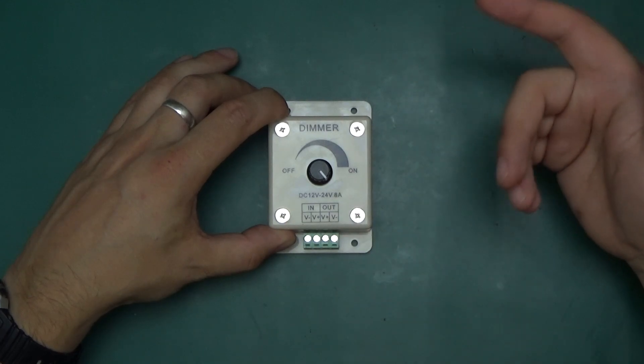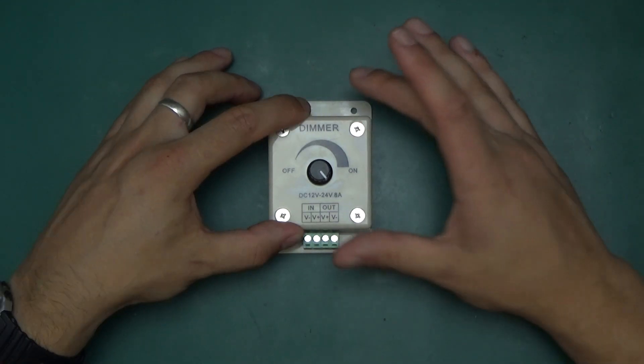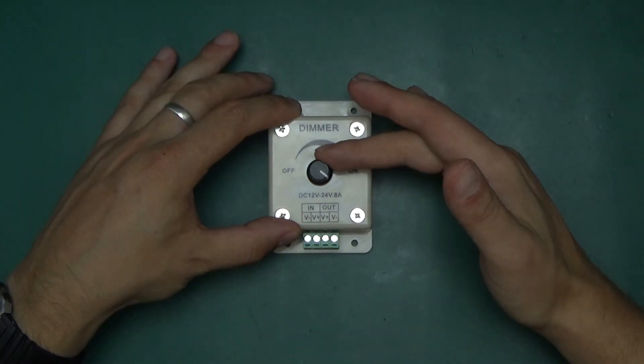It's a 12 to 24 volt input. There's a 0.8 amp. Is it 8 amp or 0.8 amp? It's a dimmer designed for LED light. It does dimming.